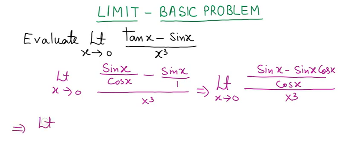Further simplification of this expression: limit x tends to 0, this will equal sin x minus sin x cos x upon x cube times cos x.